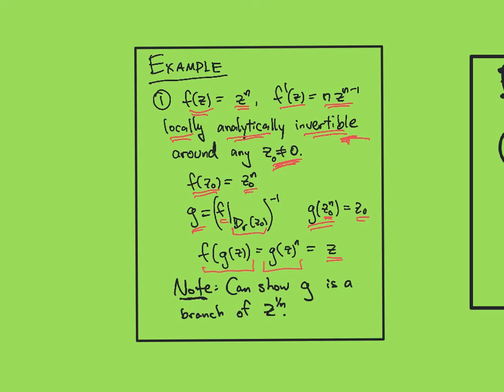So that says g to the n is z. And so one can show that g is a branch of one of these power functions or root functions z to the 1 over n.